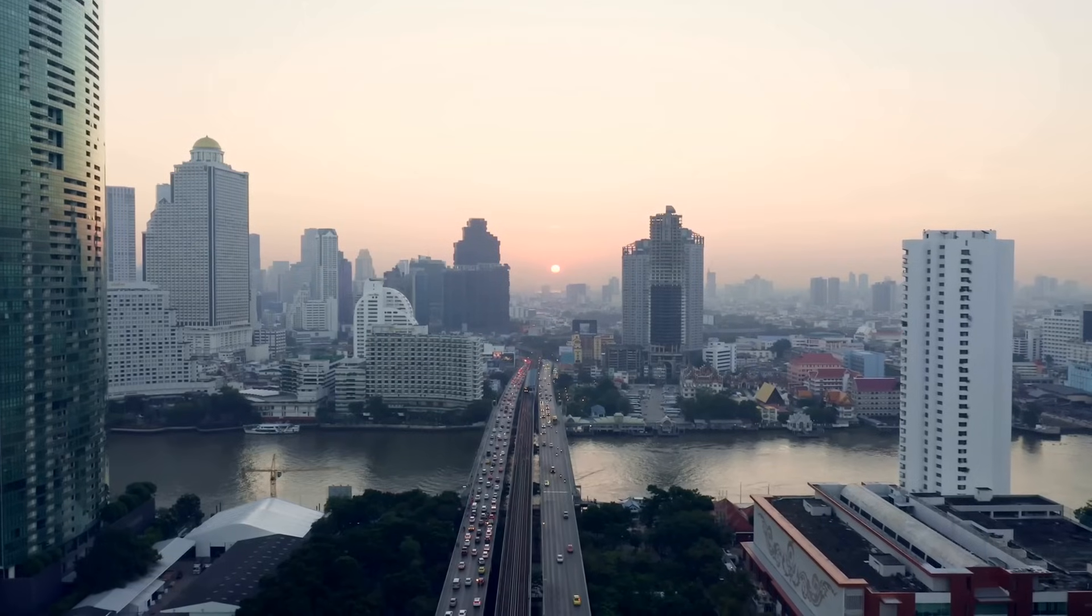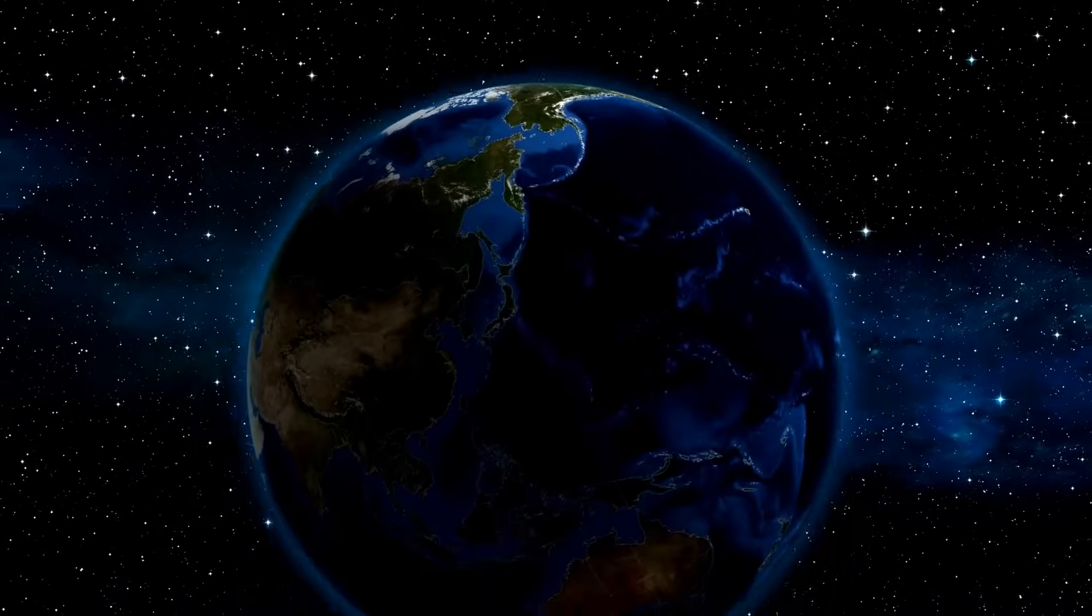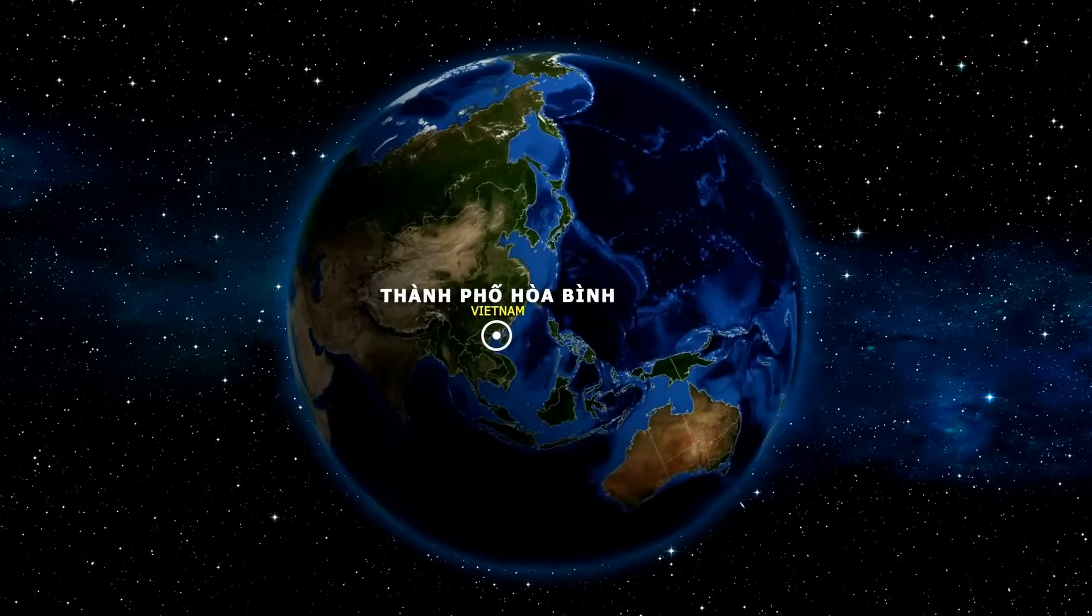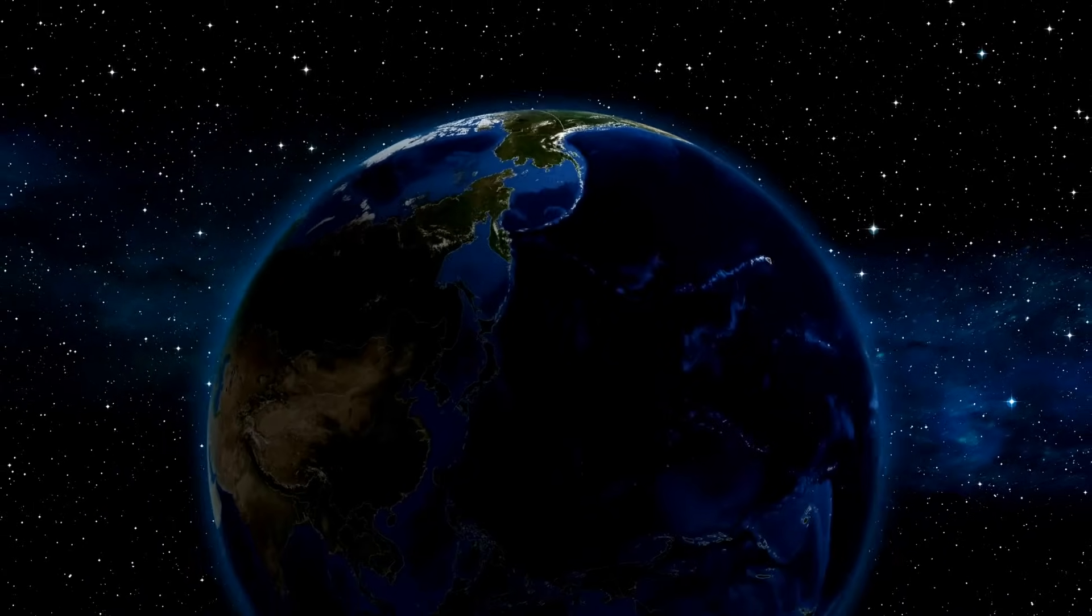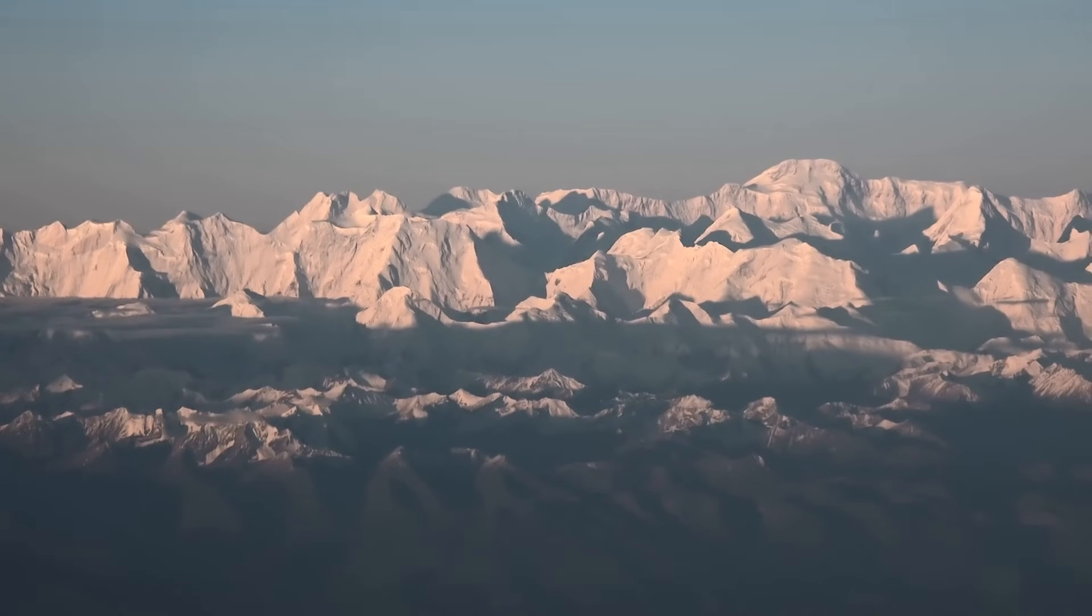At first glance, Bangkok seems like a safe zone. Thailand is not located on a major tectonic boundary. But the reality is more complex. To the west of Thailand lies the Indian plate, colliding with the Eurasian plate, a collision responsible for forming the towering Himalayas.